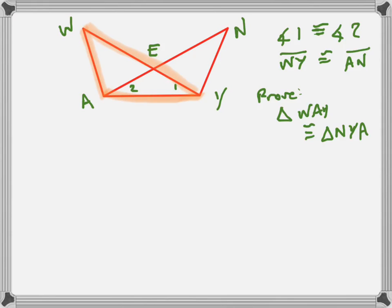is congruent to triangle NYA, NYA, that one right there, given the things that they've told us up here. Angle 1 and angle 2 are congruent, so let's go ahead and draw our congruent angle symbol so we know that.